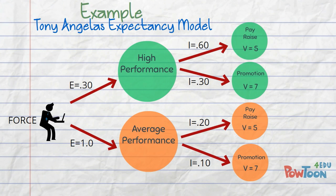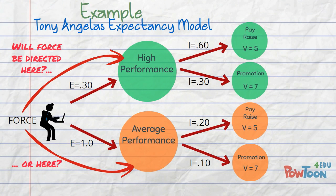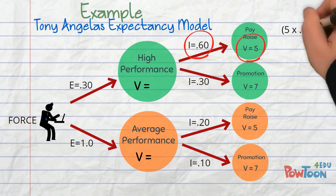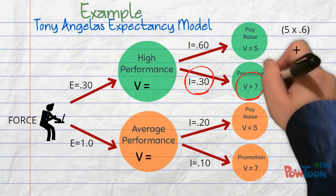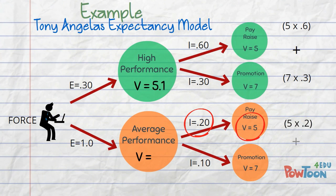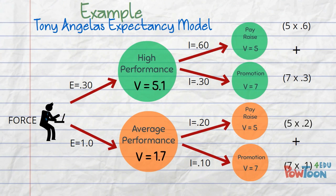Using this model, at what level of performance will Tony perform? We need to calculate his force. The first thing we need to know is the valence Tony attaches to first-level outcomes. The valence of high performance is (5 × 0.6) + (7 × 0.3), which gives us 5.1. The valence of average performance is (5 × 0.2) + (7 × 0.1), which gives us 1.7. Therefore, Tony finds high performance more attractive — 5.1 is of course much greater than 1.7.